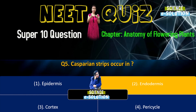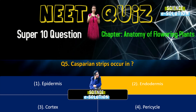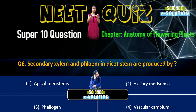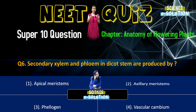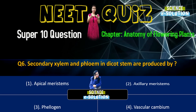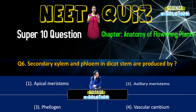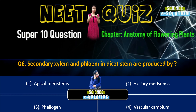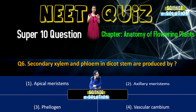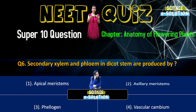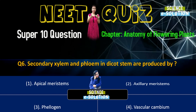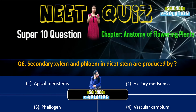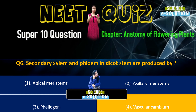Moving on to our next question: Which of the following is made up of dead cells? Colenchyma, phellum, phloem, or xylem parenchyma? Phellum, which is also known as cork, is made up of dead cells. Option number two.